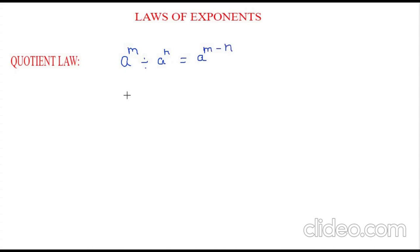Now let's see how this law is derived. So which is 2 to the power of 5 divided by 2 to the power of 3. So this we will write it as 2 to the power of 5 divided by 2 to the power of 3. So now 2 to the power of 5 can be written as 2 five times.